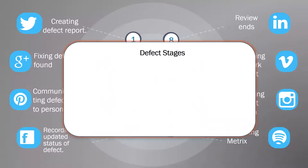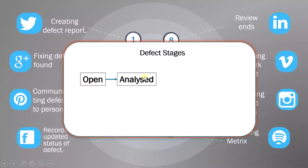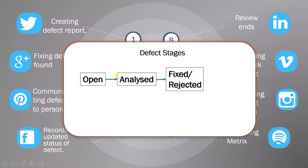The last thing we will see here is the defect stages. When you are fixing the defect it will go through different stages. The first stage is the open stage — when you create a defect report it will be in the open stage. Next it goes to the analyze stage, which occurs between creating the defect report and fixing it. After the analyzed state there will be a fixed or rejected state — while fixing, if you see that the particular feature is implemented correctly then you can reject it, obviously with a discussion. And if you feel the defect has been fixed, you change it to fixed. Finally, you close the review process, and with that the review process will completely end.